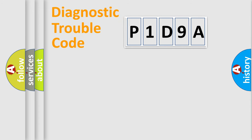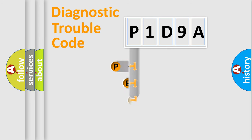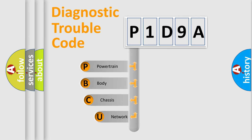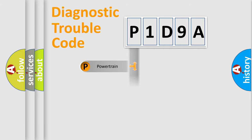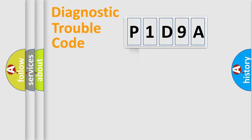Let's do this. First, let's look at the history of diagnostic fault code composition according to the OBD2 protocol, which is unified for all automakers since 2000. We divide the electric system of an automobile into four basic units: Powertrain, Body, Chassis, and Network. This distribution is defined in the first character of the code.